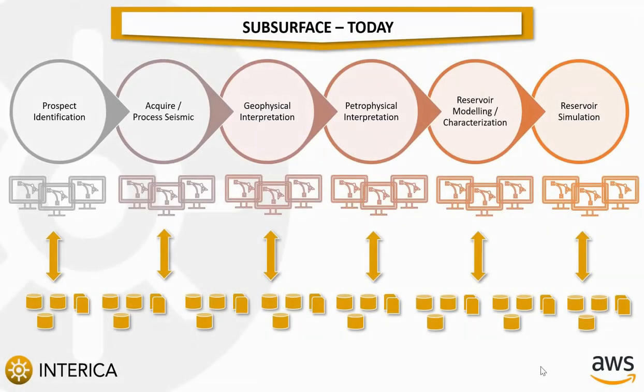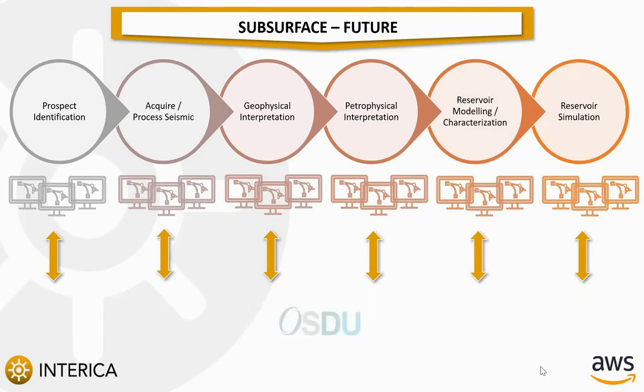I want to now summarize our new integration with the OSDU before passing over to our colleagues at AWS. Today in the subsurface world we typically use a mixed portfolio of applications to support many varied workflows, as we move from prospects identification and data acquisition through to building static and then dynamic reservoir models. These applications often take data from a range of siloed databases or store data in proprietary formats that can't easily be exchanged between different applications. This leads to a lot of data duplication, often loss of data lineage, and difficulties to quickly ascertain what we have.